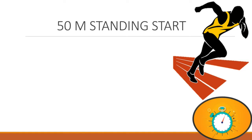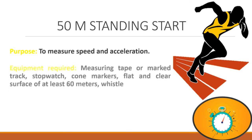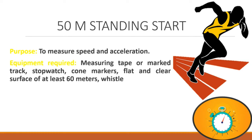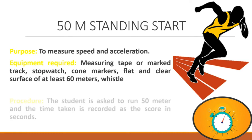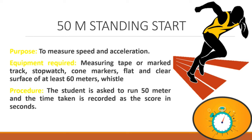50m Standing Start. Purpose: To measure speed and acceleration. Equipment required: Measuring tape or marked track, stopwatch, cone markers, flat and clear surface of at least 60m, whistle. Procedure: The student is asked to run 50m and the time taken is recorded as the score in seconds.